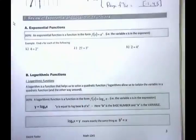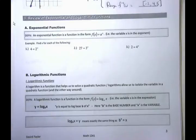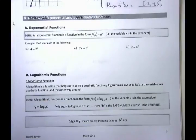Continuing the review with exponential and logarithmic functions. Remember, you first started learning about exponents back in fourth or sixth grade — things like 2 squared meaning 2 times 2, and 2 cubed meaning 2 times 2 times 2. Exponents are just a fast way of multiplying the same element by itself — x cubed is x times x times x.